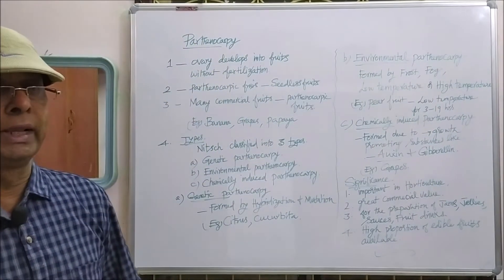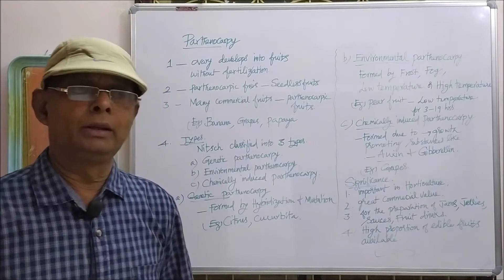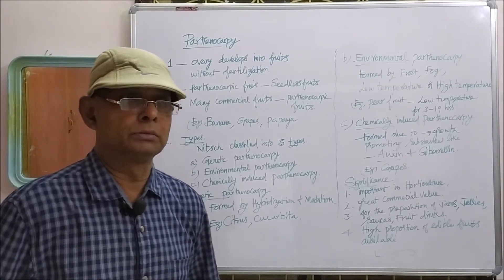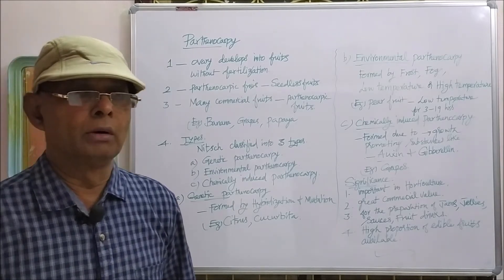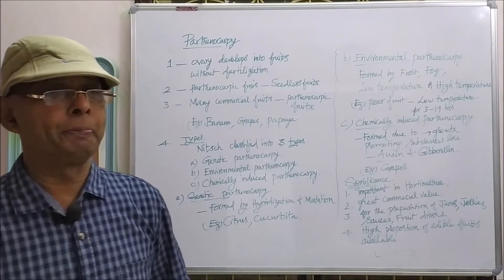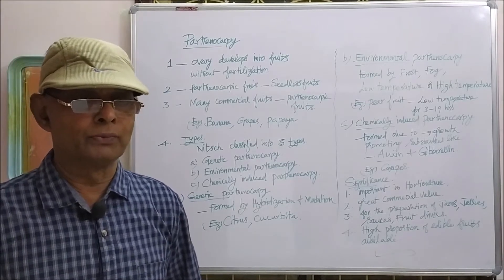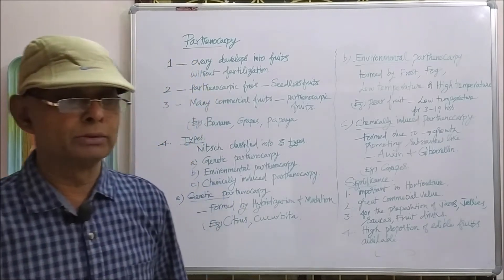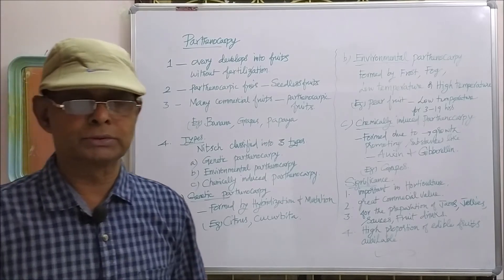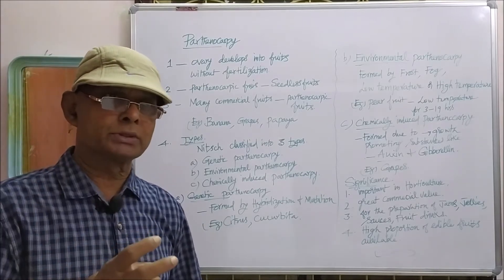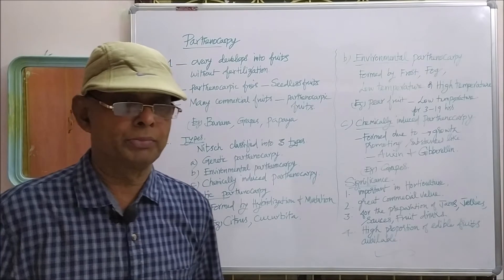Now we have to see Parthenocarpy. Normally, ovary develops into fruit after fertilization. But in Parthenocarpy, it is a process in which the ovary develops into fruit without fertilization. When the ovary develops into fruit without fertilization, that is called Parthenocarpy.